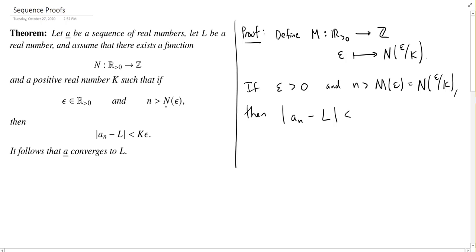we go back over here to the left. We know that if you go past the eventually number, using N, then we're less than K times the epsilon, whatever was the input of our function N.